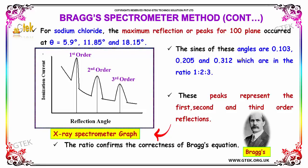The sines of these angles are 0.103, 0.205 and 0.312, which are in the ratio of 1:2:3. These peaks represent the first, second and third order reflections. This ratio confirms the correctness of Bragg's equation.